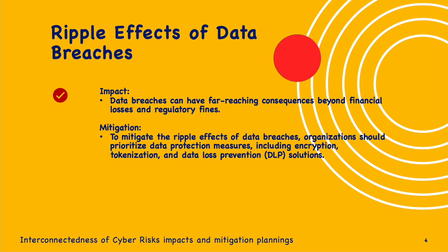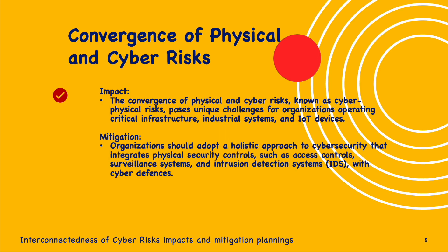The Marriott breach had a significant impact on its reputation and brand, resulting in financial losses and the implementation of enhanced cybersecurity measures. To mitigate the ripple effect of data breaches, organizations should prioritize data protection measures including encryption, tokenization, and data loss prevention. Additionally, organizations should develop incident response plans and communication strategies to minimize reputational damage and restore stakeholder confidence.